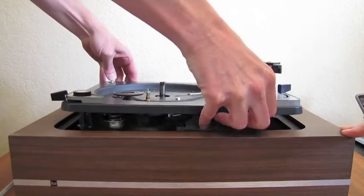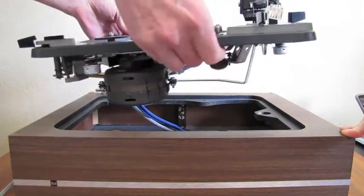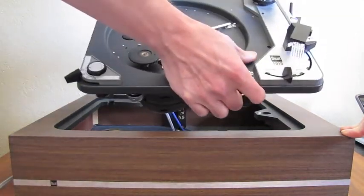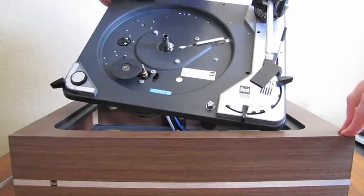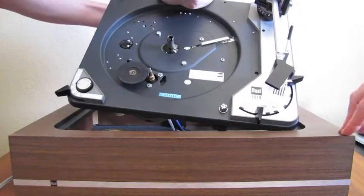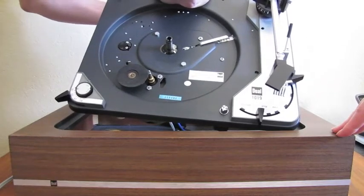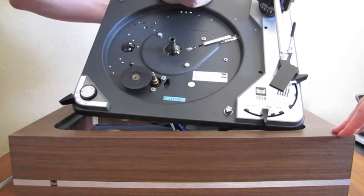It is helpful to have someone else hold the base steady. Gently rest the turntable on its corner and hold it with one hand while removing the RCA cables from underneath the turntable.